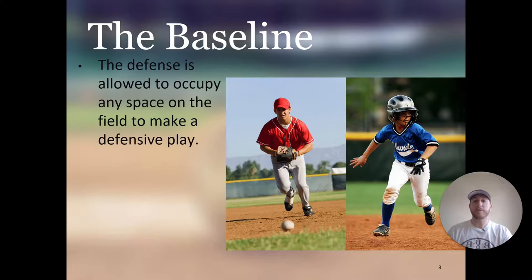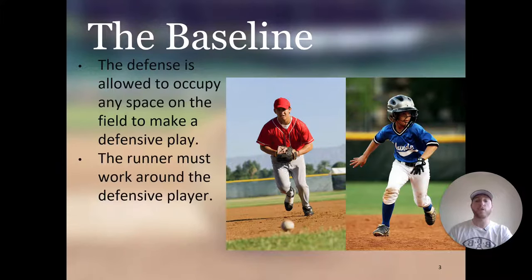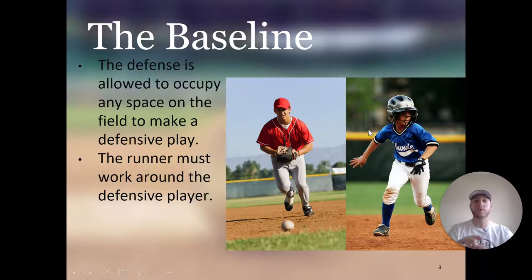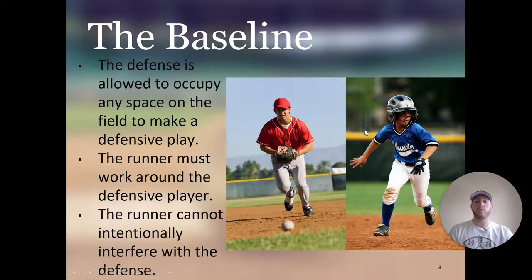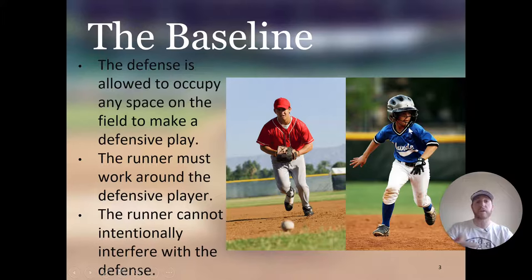The defense is allowed to occupy any space on the field to make a defensive play — the defense has the right of way anywhere in the baseline in order to make the play on the ball. The runner must work around the defensive player. The runner cannot intentionally interfere with the defense. If a base runner intentionally runs in front of a player trying to make a play, they would be called out for interference. The defense can occupy any space on the field, and runners have to give way so they don't get called for interference.